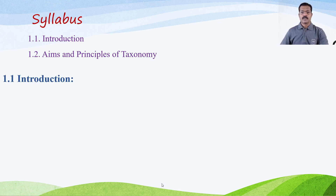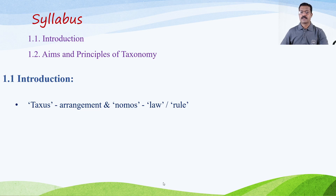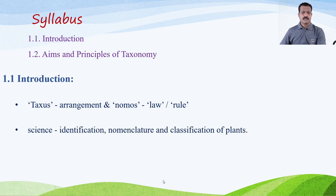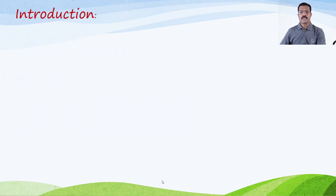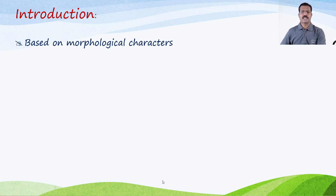The word taxonomy is derived from the Greek words: 'Taxis' meaning arrangement, and 'Nomos' meaning law or rule. Meaning thereby, lawful arrangement or arrangement by a rule. Thus, taxonomy is the science that deals with identification, nomenclature, and classification of plants.